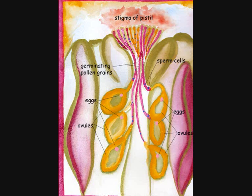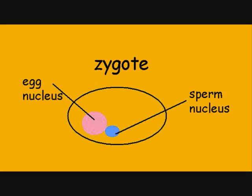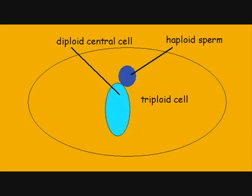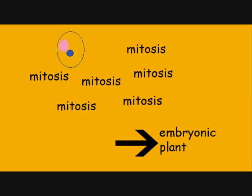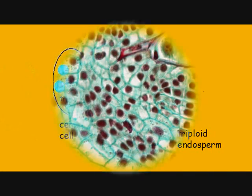Both sperm cells are involved in the sexual reproduction process. One sperm cell will fuse with the egg cell to form the diploid zygote. The second sperm cell will fuse with the diploid central cell to form a triploid cell. This process is known as double fertilization. The zygote will undergo mitosis to form the diploid embryonic plant, while the central cell will undergo mitosis to form the triploid endosperm.